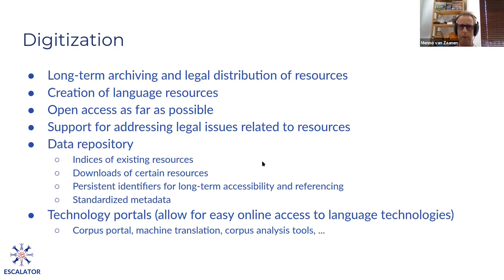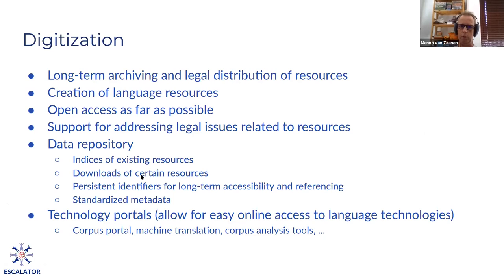We also help people make available their language resources — what they need to do to make things available. We have a repository where people can upload their resources and we can make them available to the overall public. We also have a set of what we call technology portals, essentially websites where you can directly use different tools: upload your text and analyze it, search in large text collections, or use machine translation. So we are really trying to make these tools and resources available for researchers who want to analyze languages.